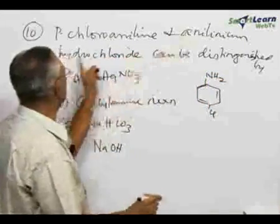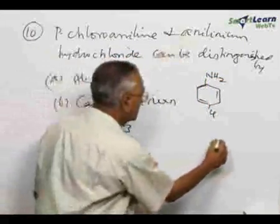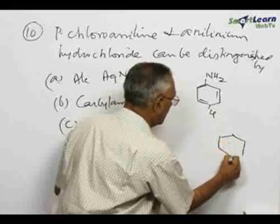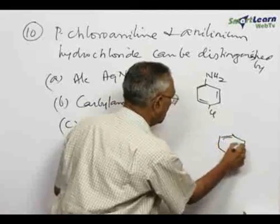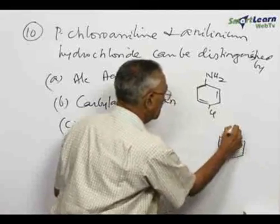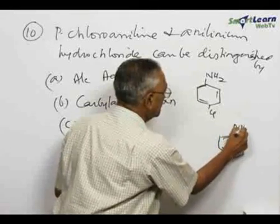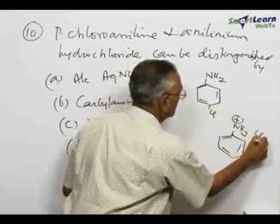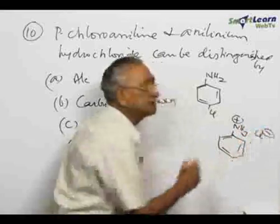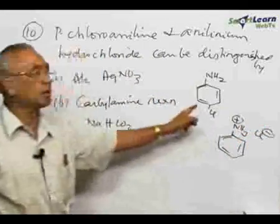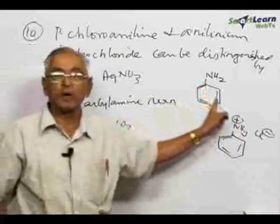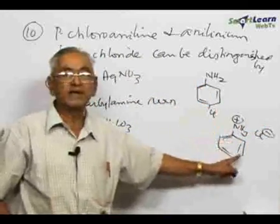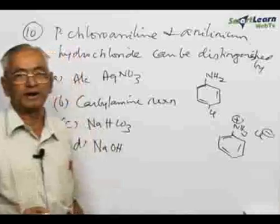The other compound is anilinium hydrochloride. Anilinium hydrochloride is aniline on reaction with HCl. So this is parachloroaniline and this is anilinium hydrochloride.